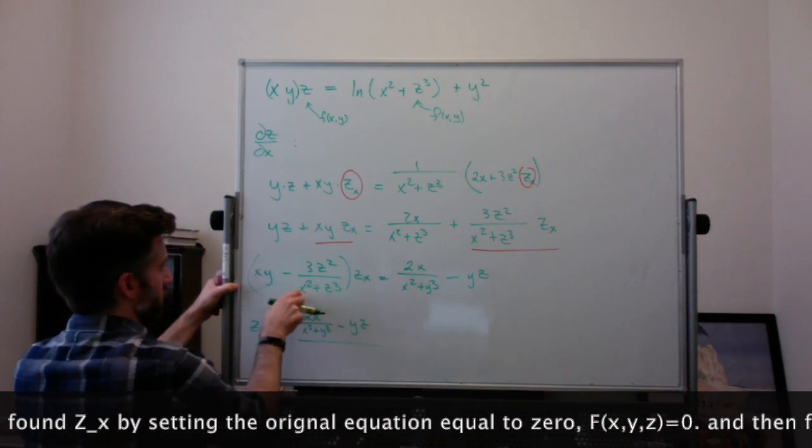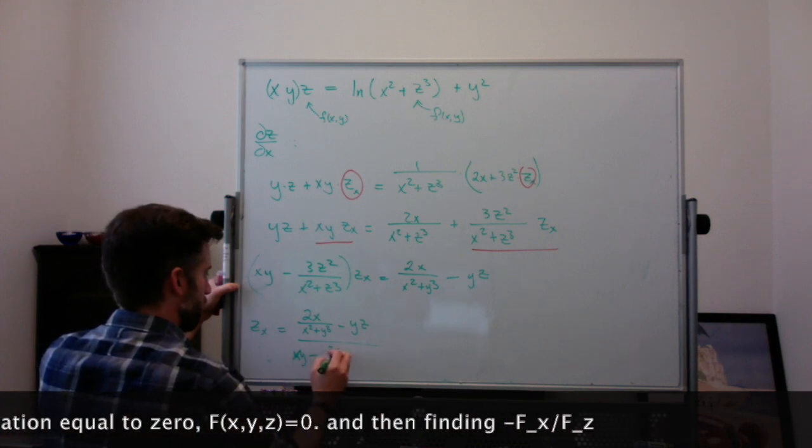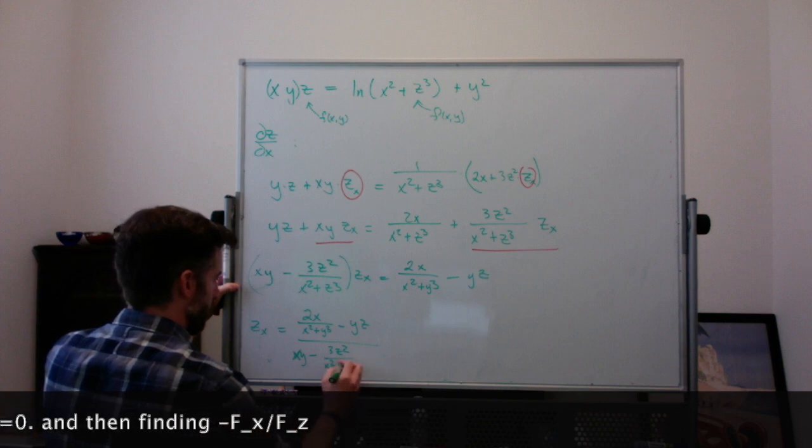So it's this divided by this. It's xy minus 3z² over (x² + y³). It's kind of gross.